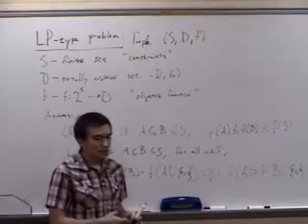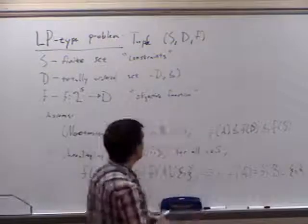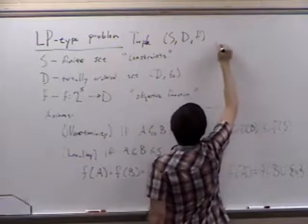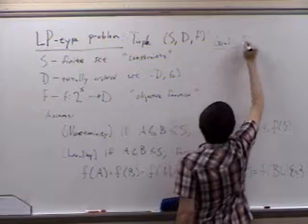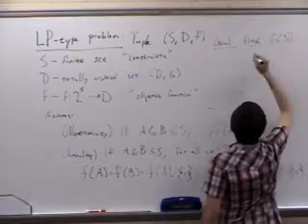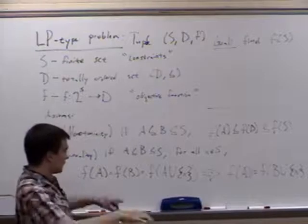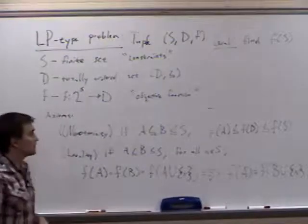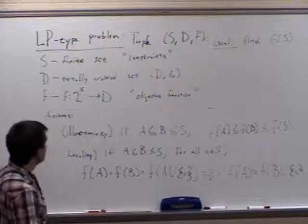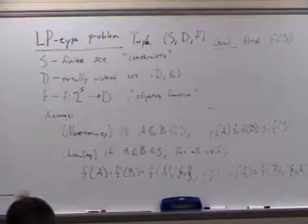It turns out that there are a lot of problems which we can interpret in this basic structure. And given this type of structure, we can actually compute F(S) very efficiently. So the general problem here — the goal — is typically to compute F(S). We'll think of F as being something where you give it a collection of constraints and it gives you the value of the objective function at that point.